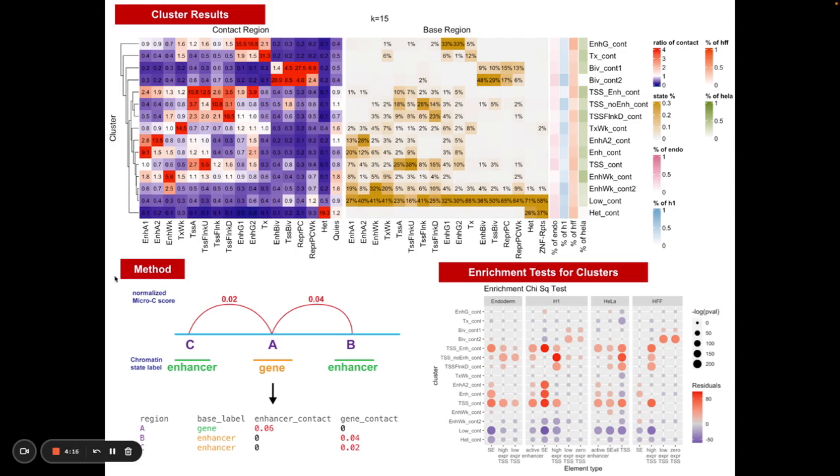The method we used to achieve this uses a data type called microc, which is very similar to high c except that it works at a finer resolution. High c tends to be at the lowest around five kilobases windows. Microc tends to be closer to the nucleosome level, around 200 base pairs, so it's very high resolution data.